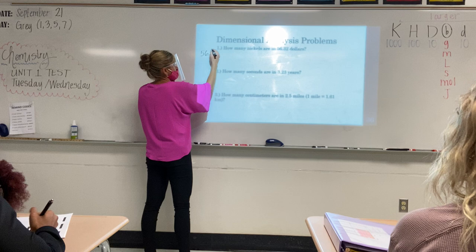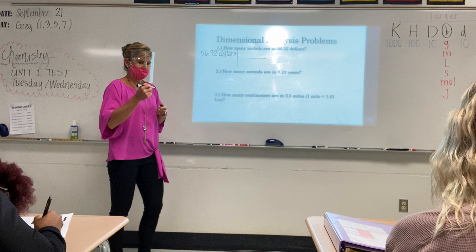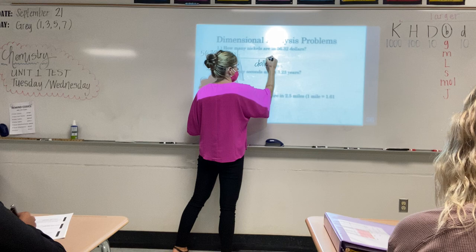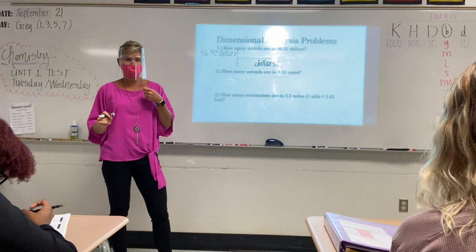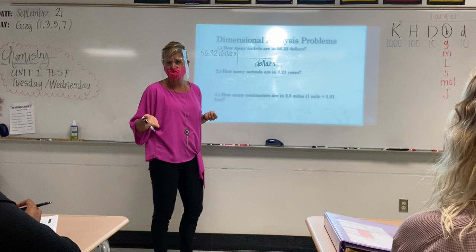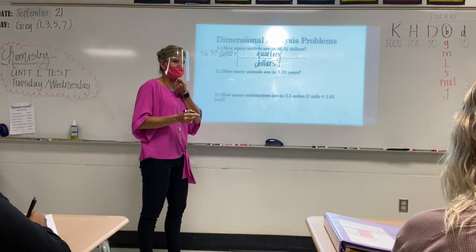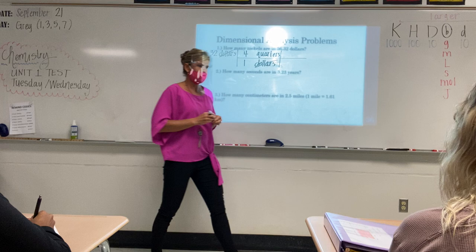We always start with our given — thank you, Jaya — 56.32 dollars. Set up your conversion factor. If we have dollars on the top, where's dollars going to go next? On the bottom. Now let's pretend we don't know how many nickels are in a dollar. What's another step we could go to first? What's smaller than dollars but not as small as a nickel? Quarters. Sure, let's go to quarters just to show you how this works. So dollars can cancel. We put our equal parts — we know four quarters is equal to one dollar.